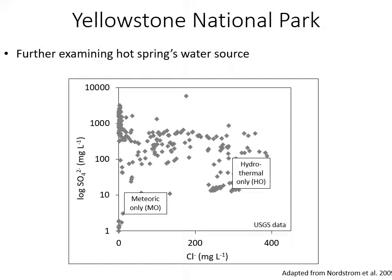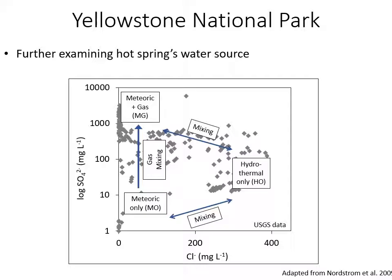Another way to visualize this is by plotting sulfate and chloride ratios. Low sulfate and low chloride means the waters come from rainfall and snowmelt. High chloride and medium sulfate indicates waters come from the deep hydrothermal aquifer of Yellowstone. Gas input will increase sulfate, and there is a lot of mixing happening between all of these end members. So we see that mixing is quite important in Yellowstone hot springs.